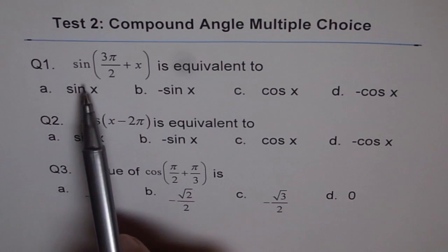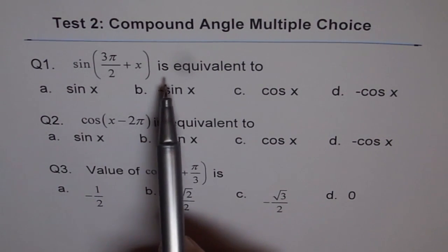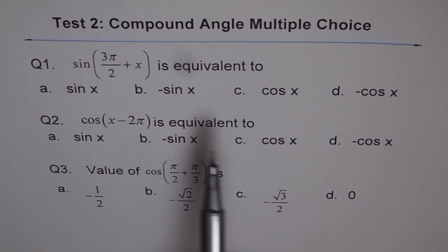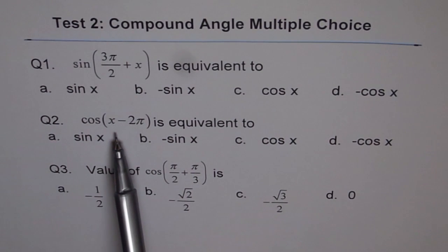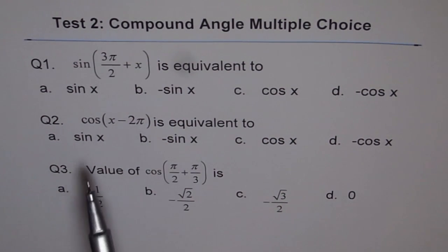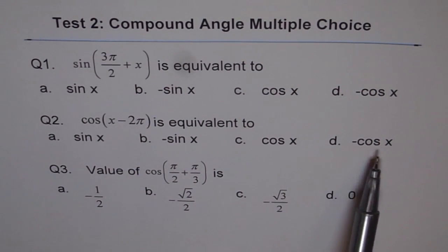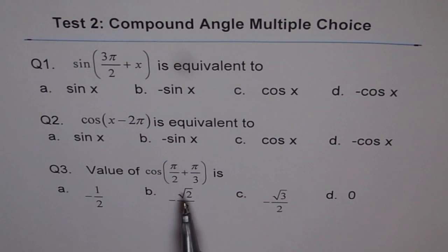Question 1. Sine of 3π/2 plus x is equivalent to: four choices are sin x, minus sin x, cos x, and minus cos x. Question 2. Cos of x minus 2π is equivalent to sin x, minus sin x, cos x, or minus cos x. Question 3. Value of cos π/2 plus π/3 is minus half, minus square root 2 over 2, minus square root 3 over 2, or 0.